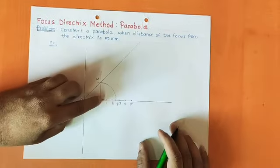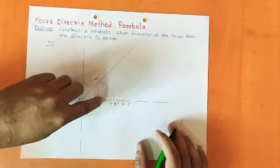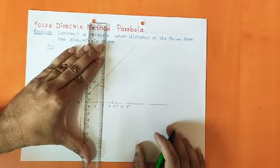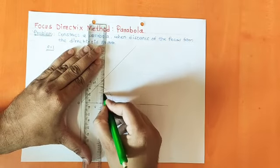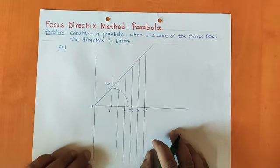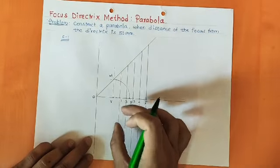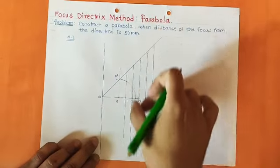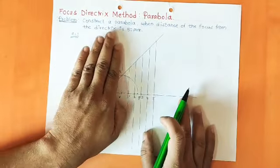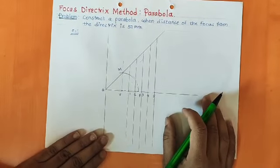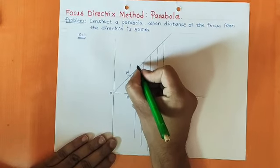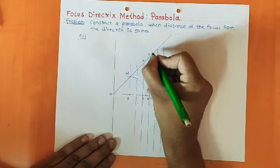Through all these 5 points, draw vertical lines — lines perpendicular to the axis — so that they cut the line OM and extend downward as well. By using a drafter, match one scale to the axis and the second scale becomes perpendicular, letting you quickly draw vertical lines. Or use a roller parallel to the directrix. Name the intersection points on line OM also as point numbers 1 through 5.